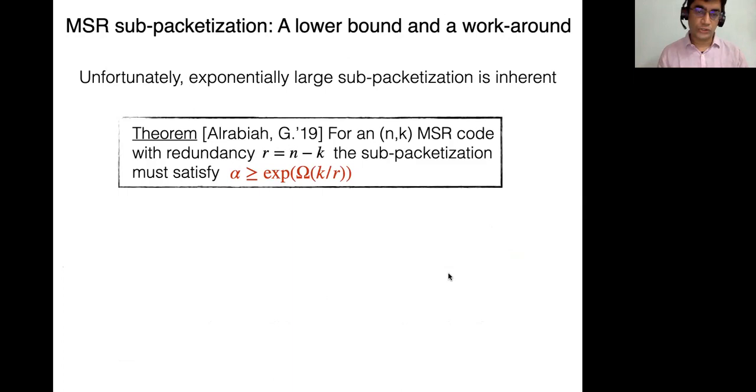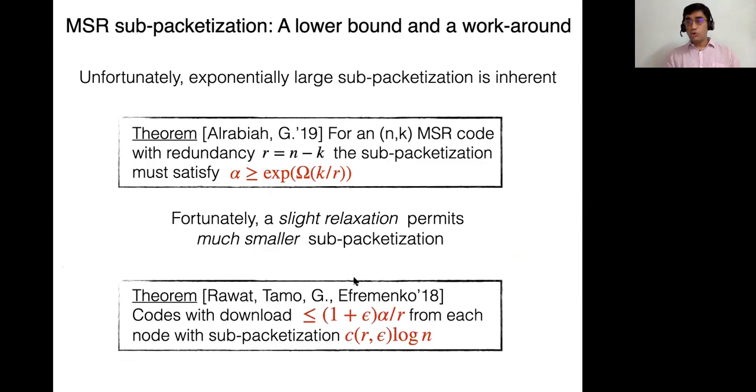In particular, large sub-packetization, put differently, limits the size of the system. Like N can be at most log alpha, and it also really complicates the maintenance of metadata and other things to deal with the system. So it's really not desirable. And this is one of the reasons these MSR codes are not deemed that practical. But of course this is just the best known constructions. So it's natural and important to wonder, can you actually do even better? And unfortunately we showed a couple of years back that for an MSR code, this large exponentially large sub-packetization is actually not an artifact of existing constructions, but it's actually inherent. And specifically what we showed with Omar al-Rabia is that the sub-packetization has to be exponential in K by R, which almost matches the known constructions. So that's bad news. On the other hand, the good news is that this lower bound is very brittle. It comes because an MSR code is a very rigid object. If you slightly relax what you're allowed to do, you can actually achieve much smaller sub-packetization. So in fact, in work which preceded this with Rawat, Tamo, and Efremenko, what we showed was that if you download instead of alpha by r symbols from each other node, a little bit more, a one plus epsilon factor more where epsilon can be as small as you want, then you can do the repair efficiently. And further, the sub-packetization only needs to be logarithmic in the size of the system. So this is a huge improvement. It's sort of a doubly exponential reduction. And all you have to give is a small percentage extra download.